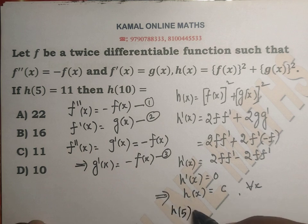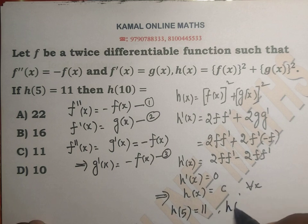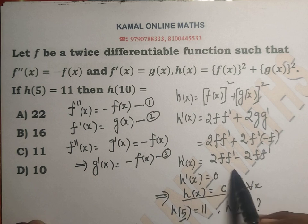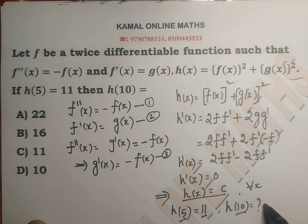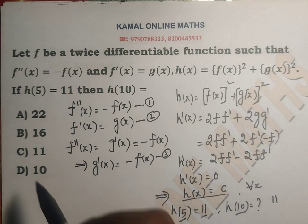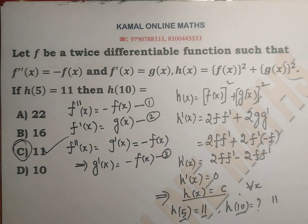Since h(x) is a constant function, for any value of x the functional value h(x) is c. Specifically, h(5) = 11, so h(10) = 11, h(7) = 11. H(x) = 11 for every x. The answer for h(10) is 11, option C.